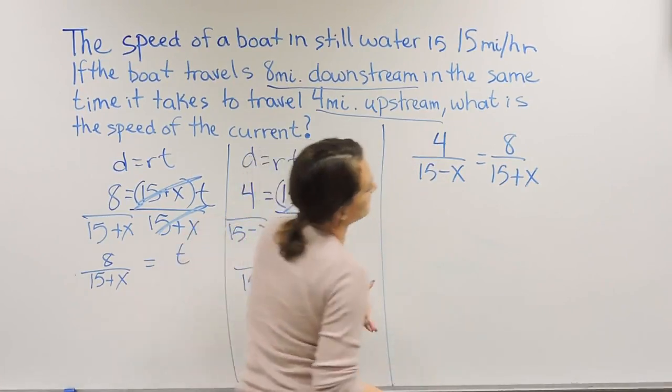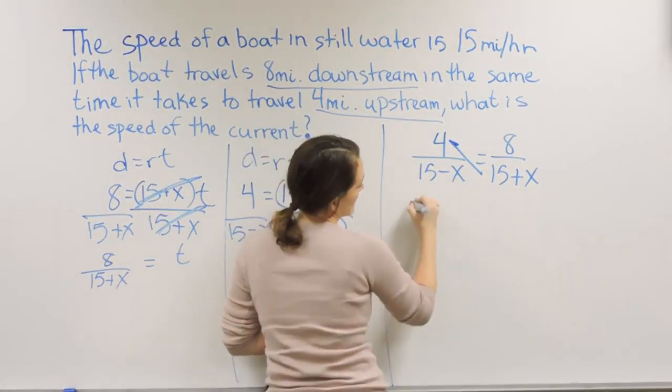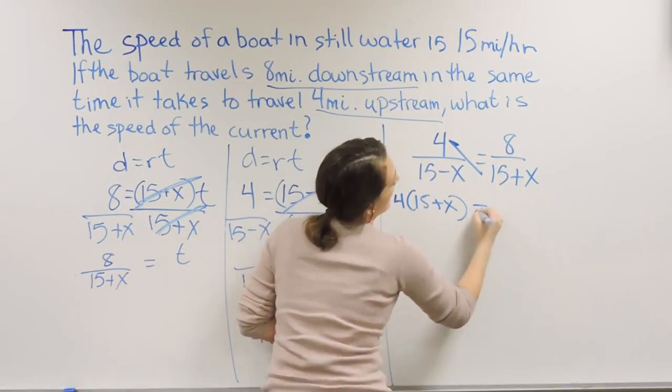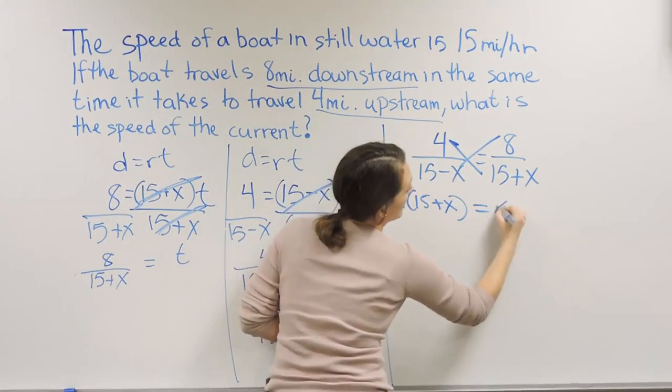So that's how I'm going to do this one here. So if I cross multiply, that means I'm going to take 4 times 15 plus X. So 4 times 15 plus X. And that's going to equal 8 times the 15 minus X.